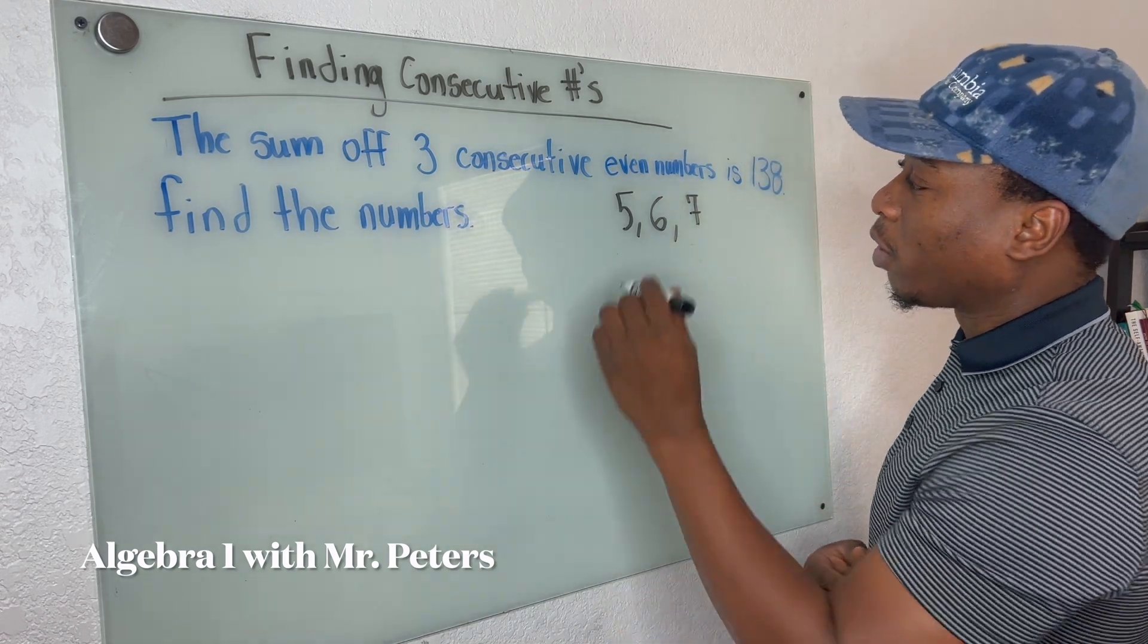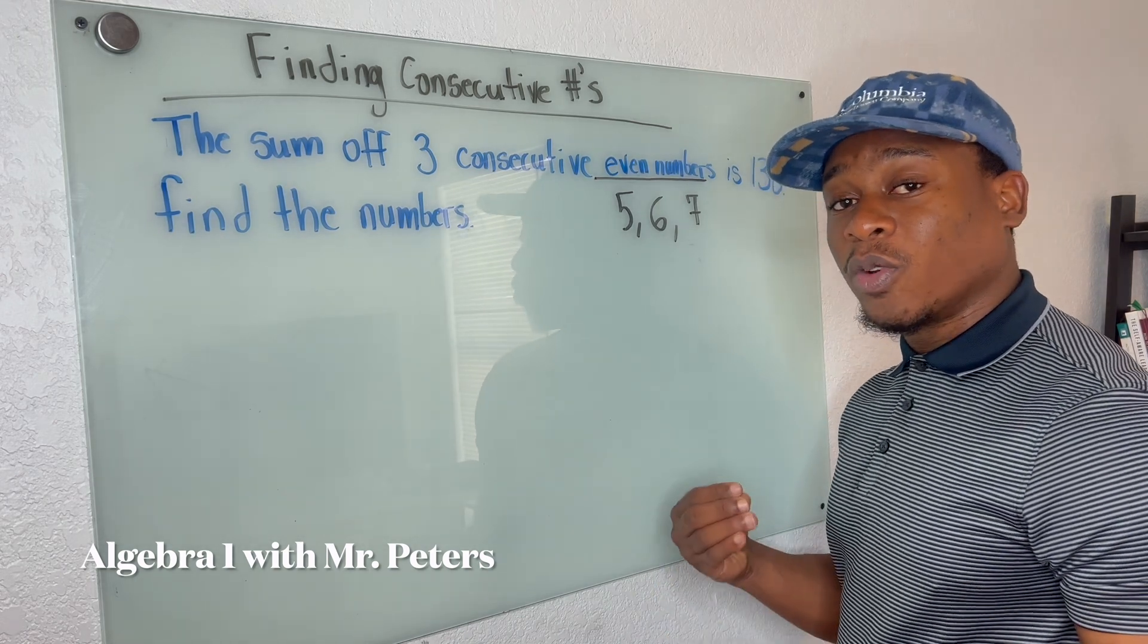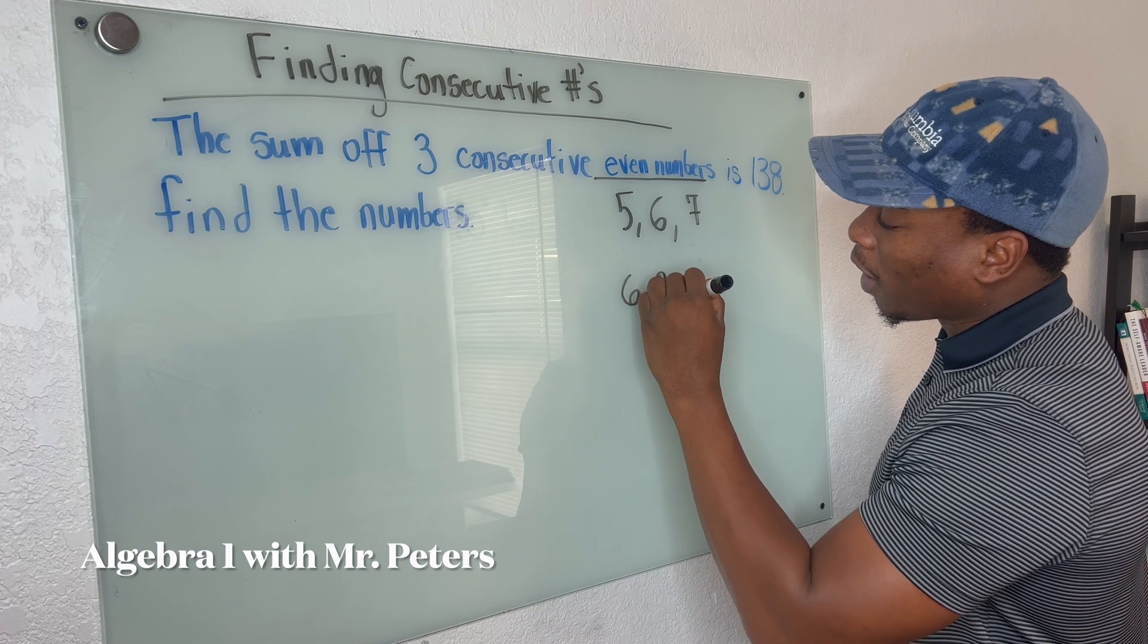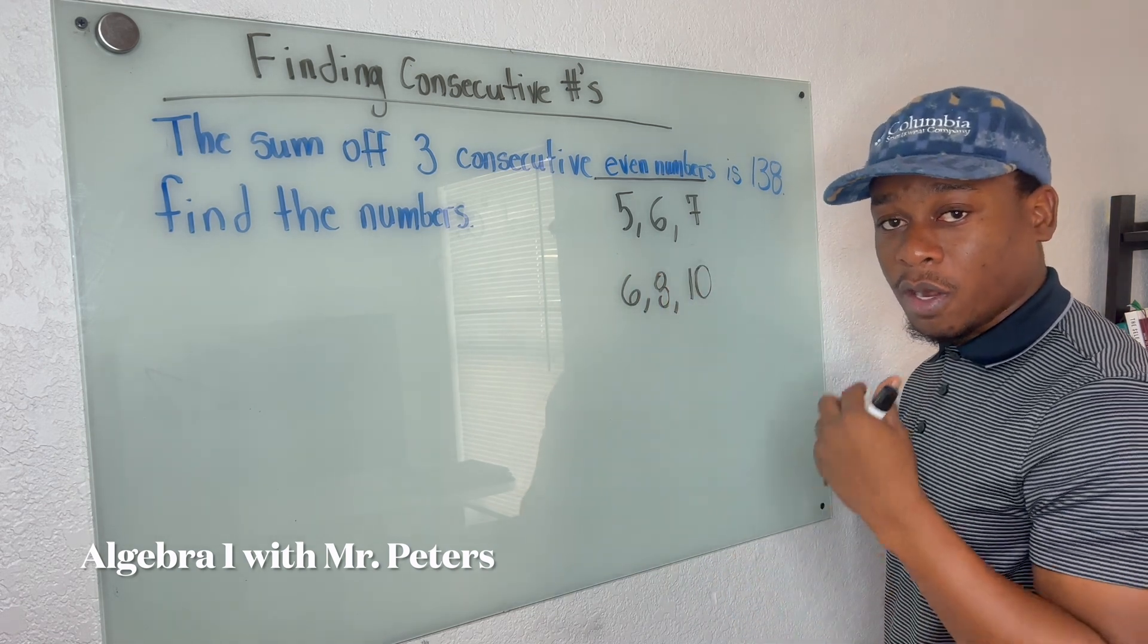But if we're talking about consecutive even numbers, that means we're going to be skipping those odd numbers. So we're talking six, eight, and 10. This will be an example of consecutive even numbers.